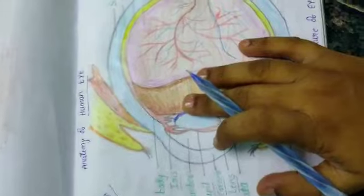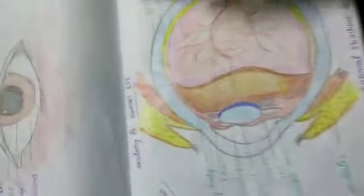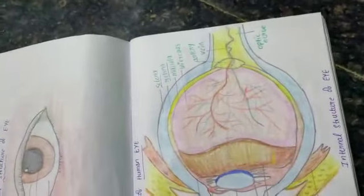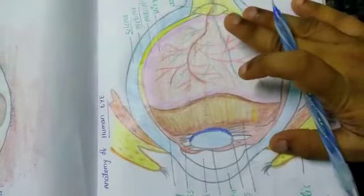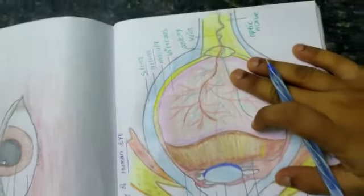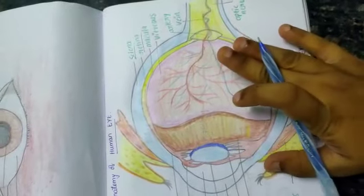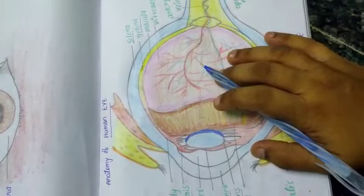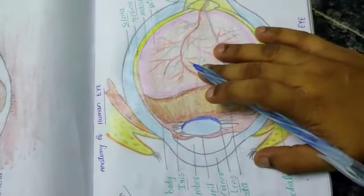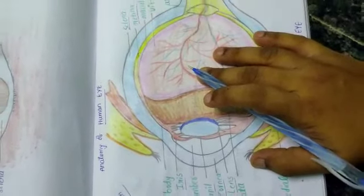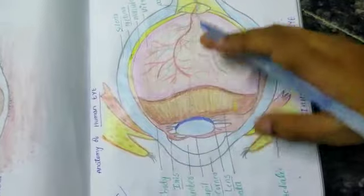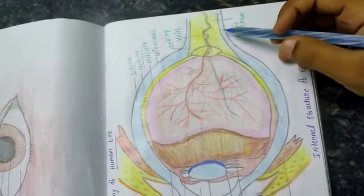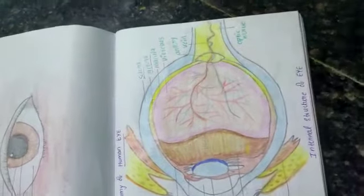Retina is the inner layer of sclera. It is a light-sensitive layer that consists of numerous nerve cells. It converts images formed by the lens into electrical impulses. These electrical impulses are then transmitted to the brain through the optic nerve. With the help of optic nerve, the objects which our eye sees are transferred to the brain.